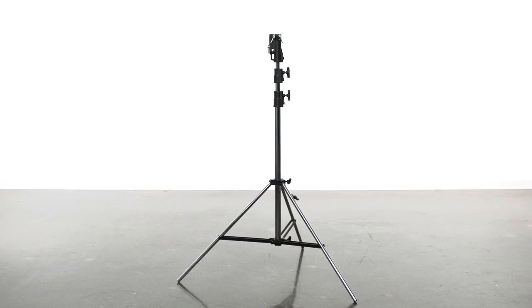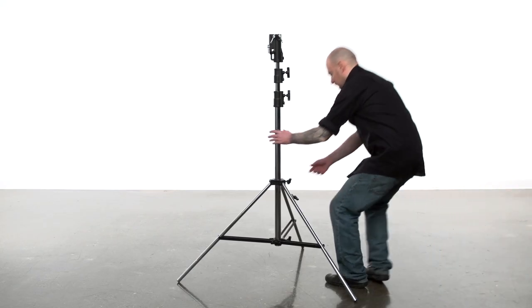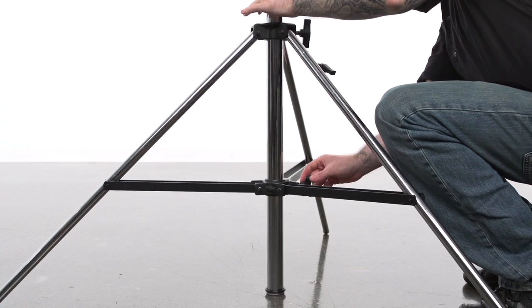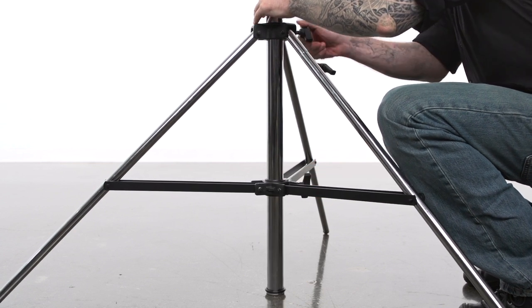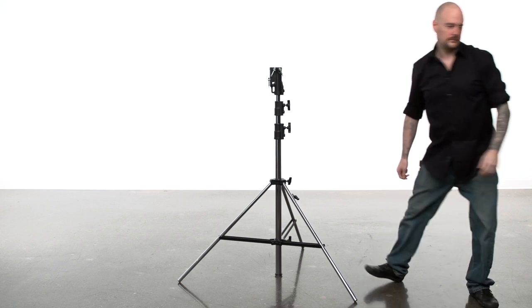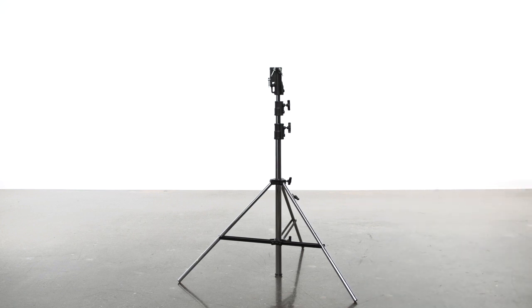By loosening both knobs securing the base to the main riser section, you can lower the main riser section until it makes a fourth point of contact with the ground. This not only lowers your center of gravity, but provides more stability for heavy loads or windy situations.